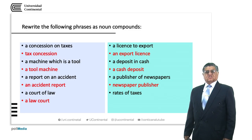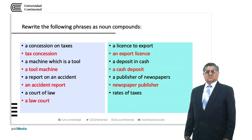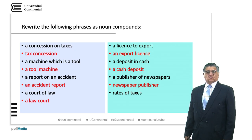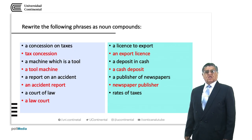Rates of taxes — this is the level of taxing that is imposed on a person, an institution, or whatever. In compound noun form, it is 'tax rates'. It is already plural because in the original phrase we are talking about rates.